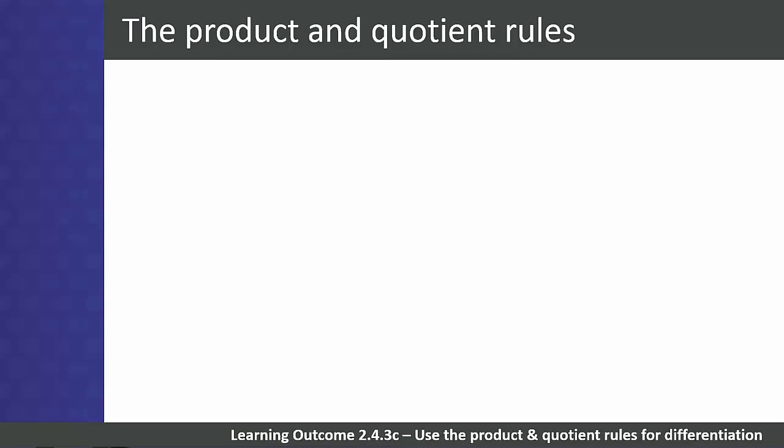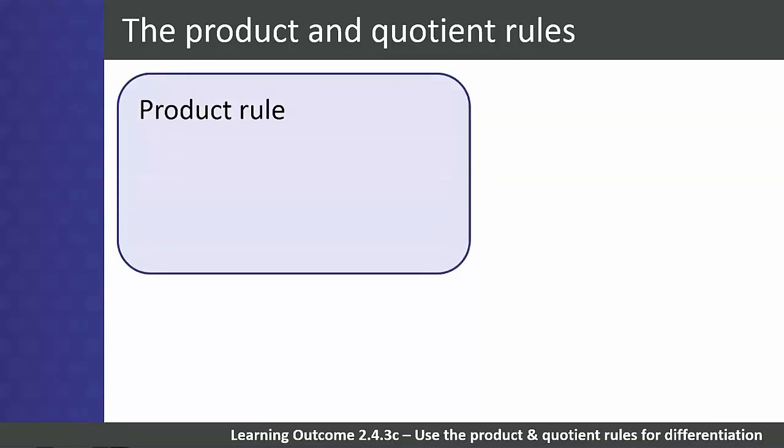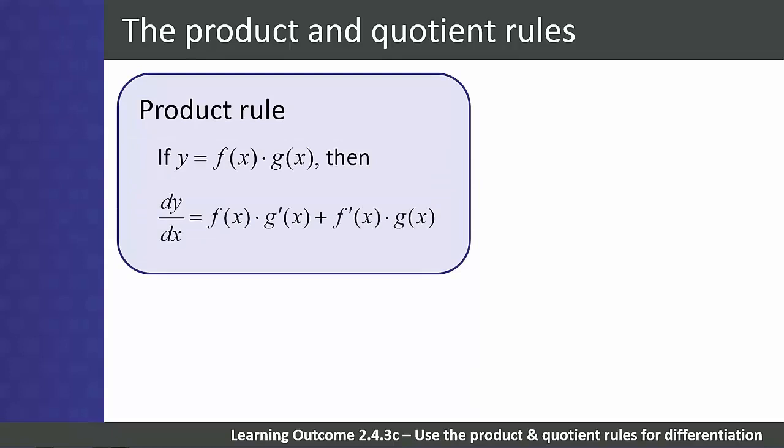The next two rules give us another way to deal with more complex differentiation problems. In this case, the complex function that we need to differentiate can be seen as being the product or the quotient of two functions that can be differentiated. The Product Rule states that the derivative of the product of functions f and g is equal to f multiplied by the derivative of g, plus the derivative of f multiplied by the function g.